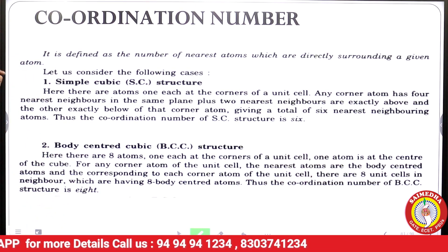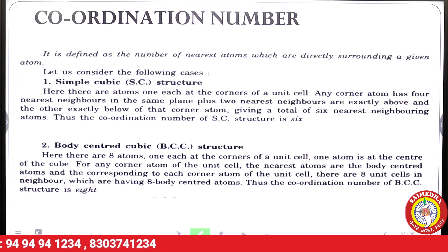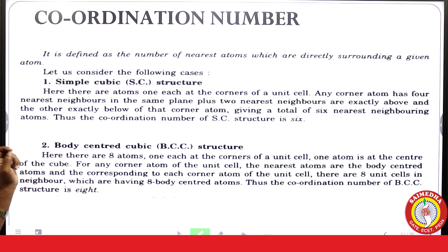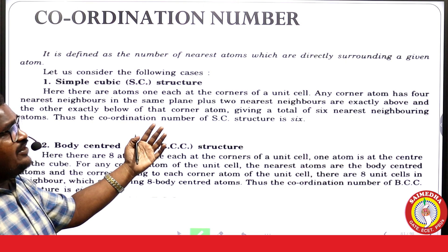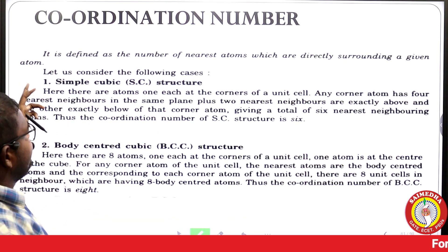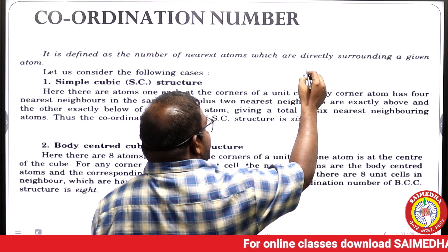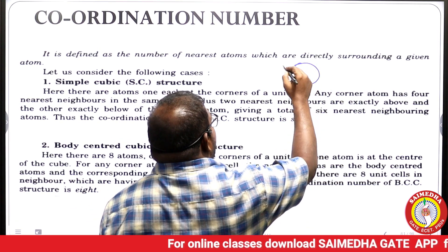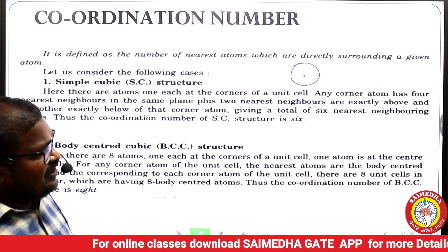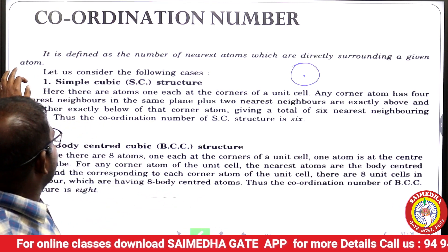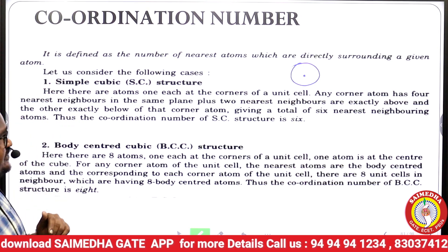Now let us discuss coordination number. It is defined as the number of nearest atoms which are directly surrounding a given atom. Let us consider some cases. The first case is the simple cubic (SC) structure.